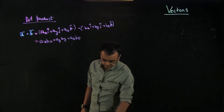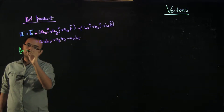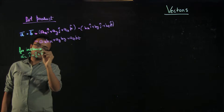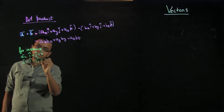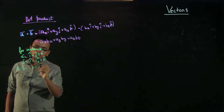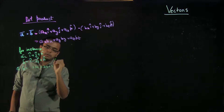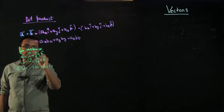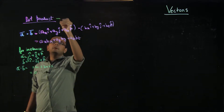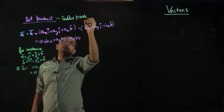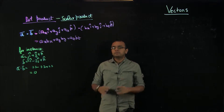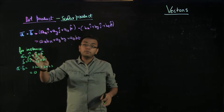For instance, if vector a is i plus j plus k, and vector b is i minus 2j plus k, then a·b equals 1×1 minus 1×2 plus 1×1, which equals 0. So it gives you a scalar. That is why it is also known as a scalar product, because when you input two vectors into a dot product, it gives you a scalar. It is very important to understand that a dot b will never give you a vector — it will always give you a scalar.